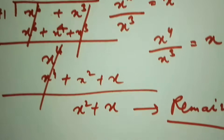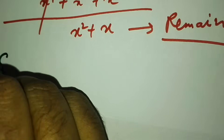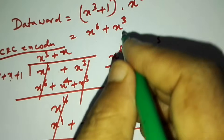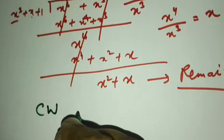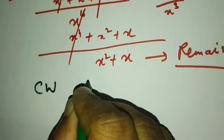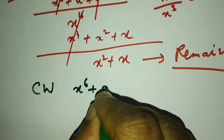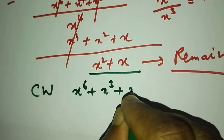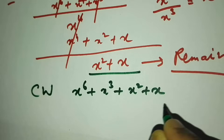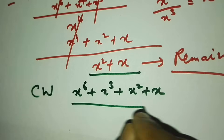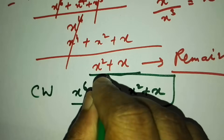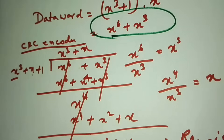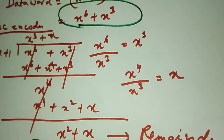So the code word will be your data word x⁶ + x³ plus the remainder x² + x. That is the code word the sender is sending.